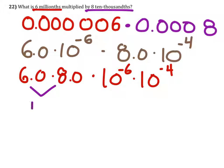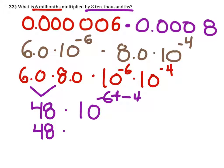Six times eight is forty-eight, times ten to the power of negative six plus negative four. So we get forty-eight times ten to the power of negative ten.